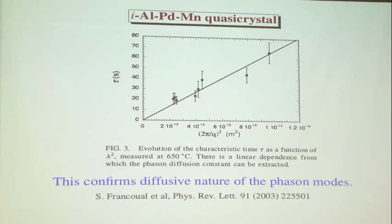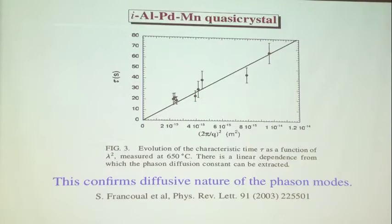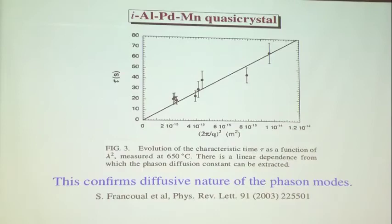Who needs small-angle scattering? Let's go to large-angle scattering. Large-angle scattering is harder, but for material science it's actually more informative. Now that we have more coherence we should do it more. Here they're looking at a quasicrystal — quasicrystals have excitations called phasons related to their incommensurate structure. The relevant q here is the phason q — how far away you are from the underlying Bragg peak — and the time constant goes like q², which tells us unambiguously that phasons are diffusing.